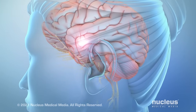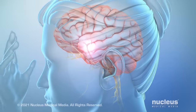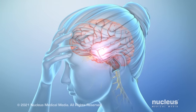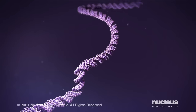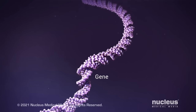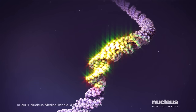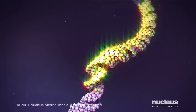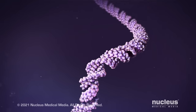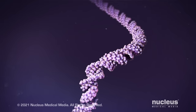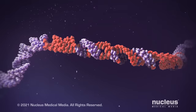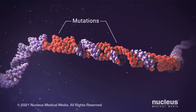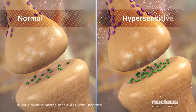Migraine is a disease where one or more parts of this communication system does not function properly. Many sections of DNA, called genes, program ion channels, neurotransmitters, and other structures that support these nerve pathways. In some with migraine, inherited changes to genes, called mutations, can cause the communication system to become hypersensitive.